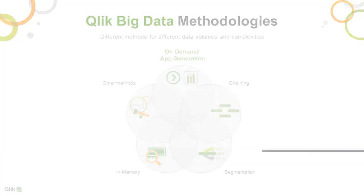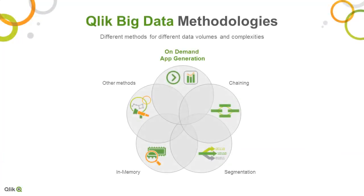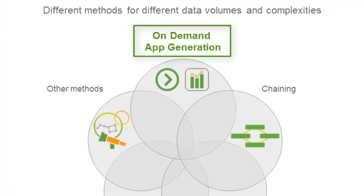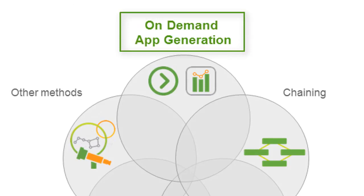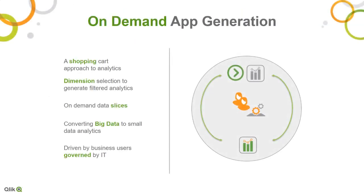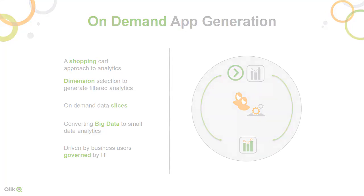This video is a brief overview of just one of several methodologies that can be used by Qlik to manage big data sets. Known as on-demand app generation, it's built in from the June 2017 release of Qlik Sense. On-demand app generation takes a shopping cart approach to big data analytics through a process of filtering dimensional data at an aggregated high level. Data slices can then be automatically generated on demand for detailed analytics by users, all in a secure and governed manner.